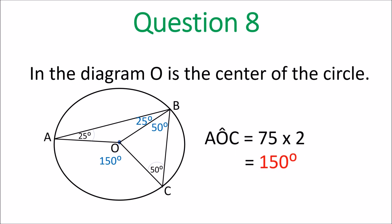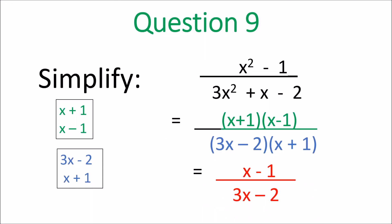Question 9: simplify x squared minus 1 over 3x squared plus x minus 2. Difference of two squares on top gives factors (x+1)(x−1). Factorizing the bottom, 3x squared plus x minus 2 gives (3x−2)(x+1). Cancel out (x+1) on top and bottom — on top you're left with (x−1), on the bottom (3x−2). You can't simplify further: the answer is (x−1) over (3x−2).